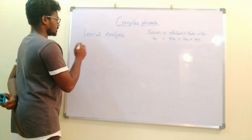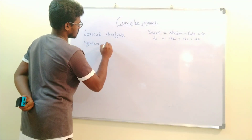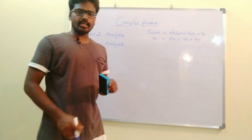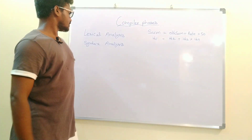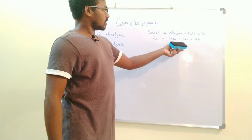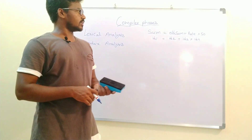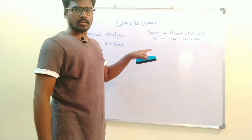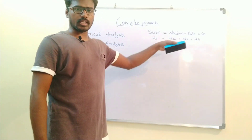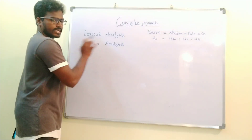The next phase in the compiler is syntax analysis. The name itself says syntax — in this phase it will find any syntax errors in the statements or code. For example, missing a semicolon at the end of a statement in Java is a syntax error. If you place two variables side by side without any operator in between, that is also a syntax error, because we can't have id1 and id2 without an operator in between.